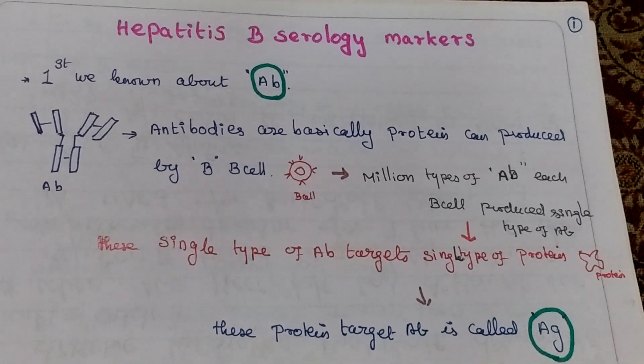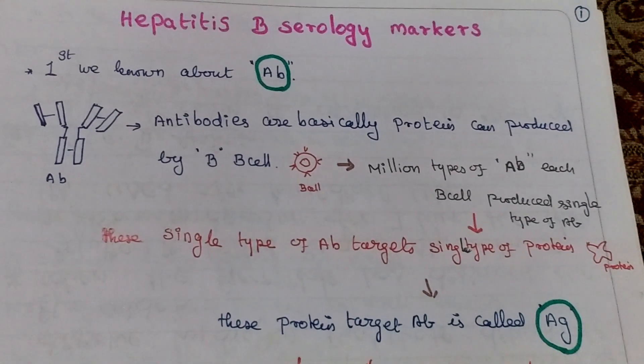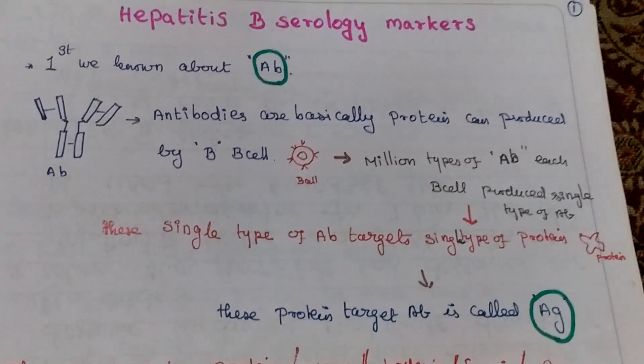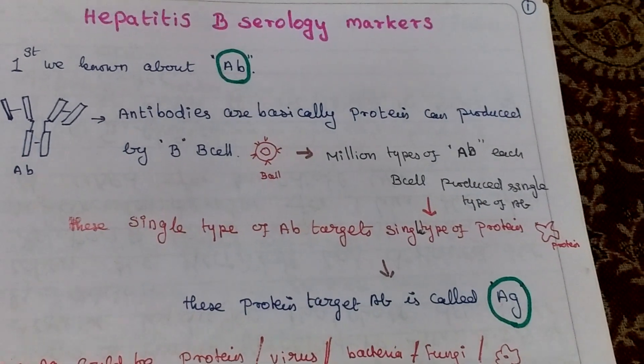Antibodies are basically protein molecules produced by B cells. B cells produce millions of types of antibodies that produce single types of proteins.